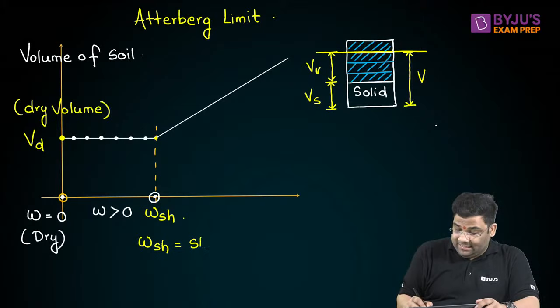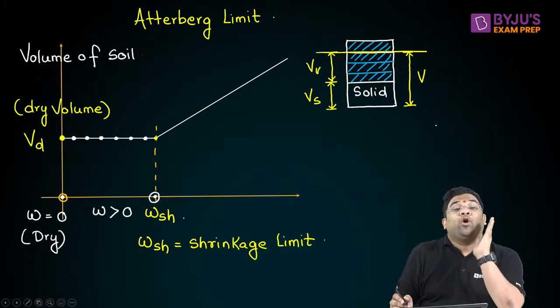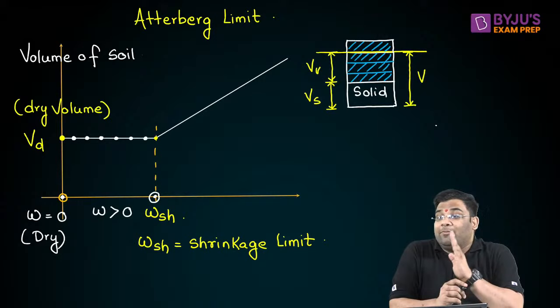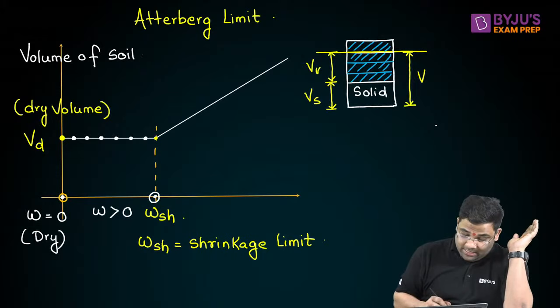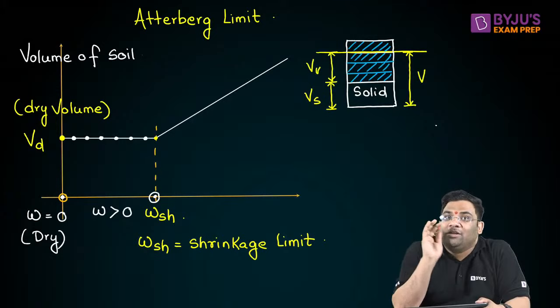Shrinkage limit is the water content below which the volume of soil is constant. Above it, the volume will increase. Shrinkage limit is the limit below which the volume of soil is constant.